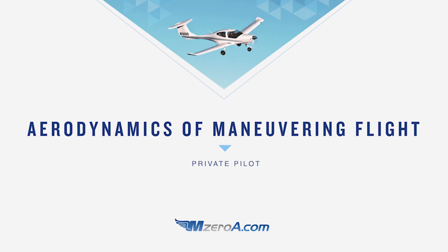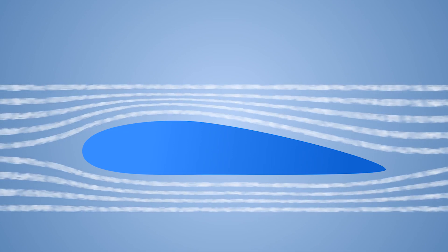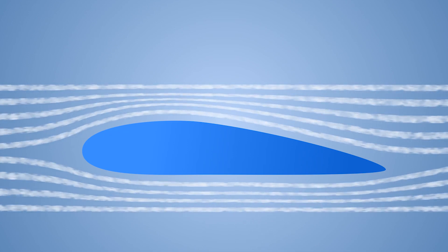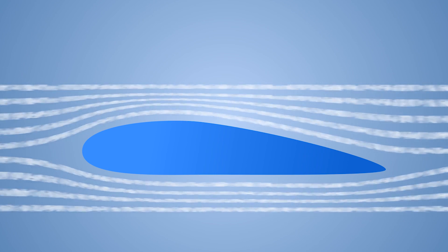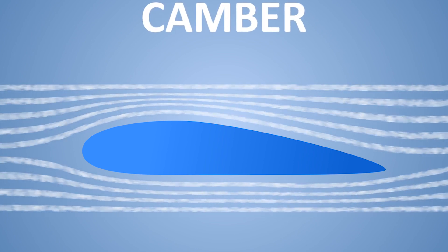Jason back with you talking about the aerodynamics of maneuvering flight and Bernoulli's principle. We're going to understand that at the private pilot level. You need to understand this phrase because it's going to be on your checkride and your knowledge test. Basically, Bernoulli's principle states that as air flows over the wing, it speeds up and creates a low pressure spot over the wing because of the convex shape of the wing, which is known as camber.